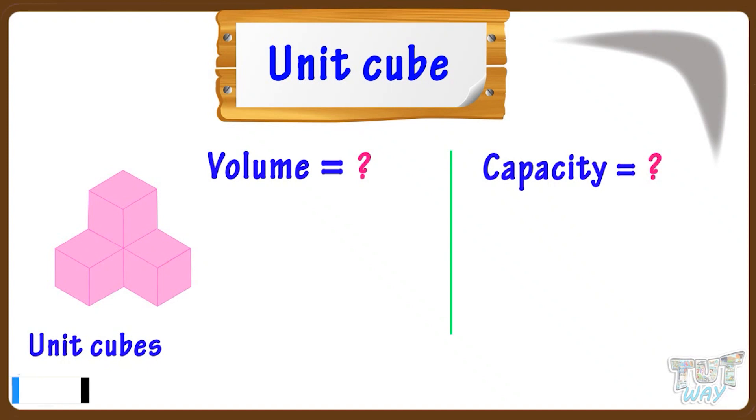For that, first of all, we will find out how many unit cubes it is made up of. Let's see. Three cubes at bottom and one above. So, it's made up of four unit cubes.